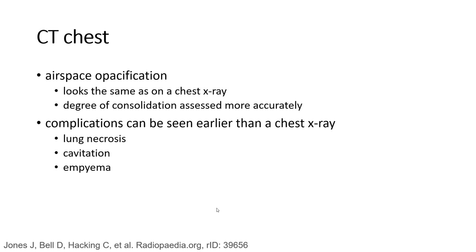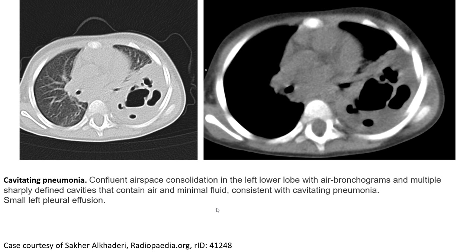On chest X-ray, pneumonia can also appear as airspace opacity. On CT, we can also find complications such as lung necrosis, cavitation, and empyema. This is an example of cavitative pneumonia on CT, showing airspace consolidation in the left lower lobe with air bronchogram and multiple sharply defined cavities that contain air, consistent with cavitative pneumonia. Small left-sided pleural effusion is also noted.